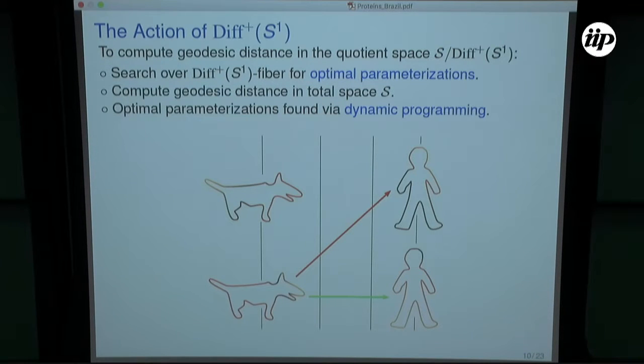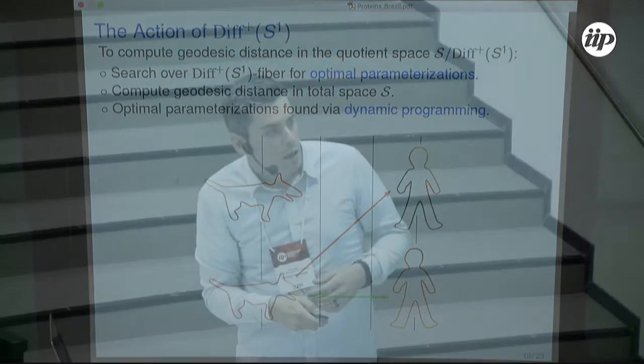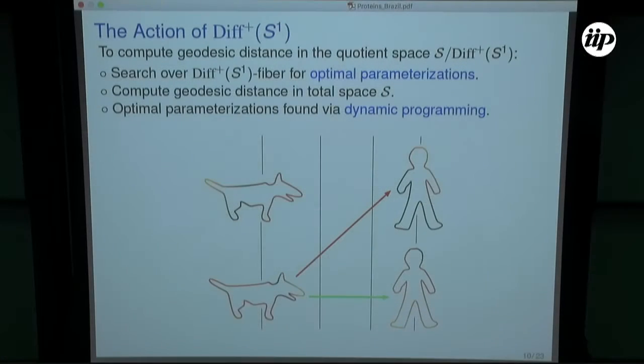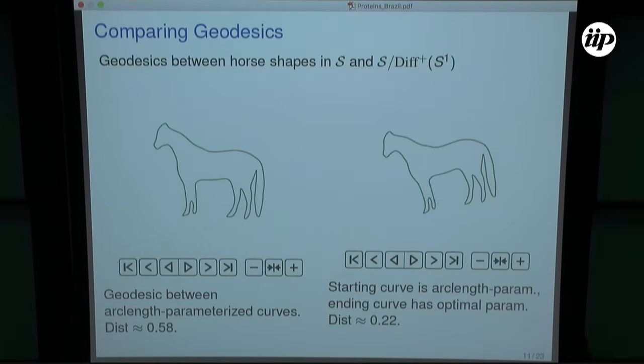Solving the parameterization issue boils down to an optimization problem. The cartoon of how this works: I have my infinite dimensional space of shapes divided up into fibers of the diffeomorphism group — each fiber corresponds to all parameterizations of the same shape. I search for the closest parameterization in this total space. The point is I can actually do this — I can figure out what the best parameterization is — and then write down explicit geodesics in the Grassmannian.